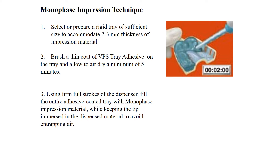Coming to the monophase impression technique. You select and prepare a rigid tray of sufficient size to accommodate two to three mm thickness of impression material. Brush a thin coat of tray adhesive if required and allow it to dry for five minutes. Then, using a firm dispensing stroke, coat the entire tray with the monophase impression material while keeping the tip immersed in the material to avoid entrapment of air bubbles.